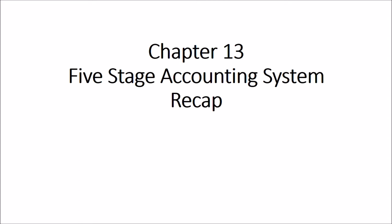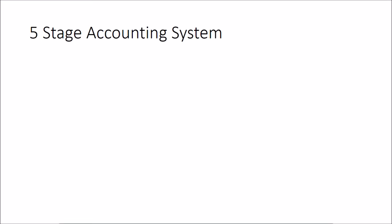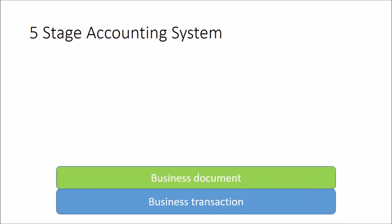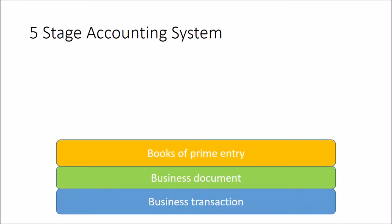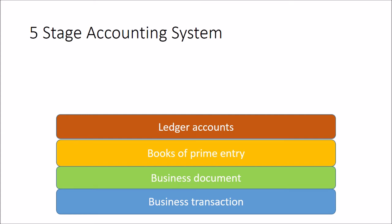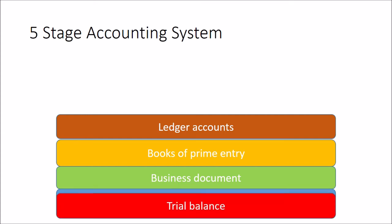Information flow is not linear in progression through the stages, although it will eventually end at the trial balance. The five categories are: business transactions into business documents; business documents posted into the books of prime entry; the books of prime entry creating journals to post into the ledger accounts; the ledger accounts balanced down to create a trial balance; and then the sales ledger and purchase ledger reconciled into the purchase ledger control account and the sales control account. In an exam you can be tasked with entering figures into or producing these items, or correctly identifying the stage of an item.